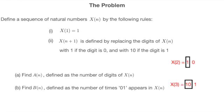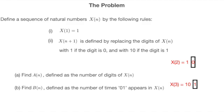To get X(3), we need to look at X(2) and apply the rule above, digit by digit. Since the first digit of X(2) is 1, X(3) will start with 10. We continue further and apply the rule above to the second digit, which is 0, so we replace it with 1, to see that X(3) equals 101.